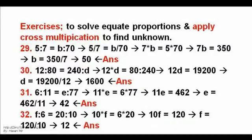Exercises 29, 30, 31, and 32. To solve, equate proportions and apply cross multiplication to find the unknown. The answers are 50, 16, 42, and 12, respectively.